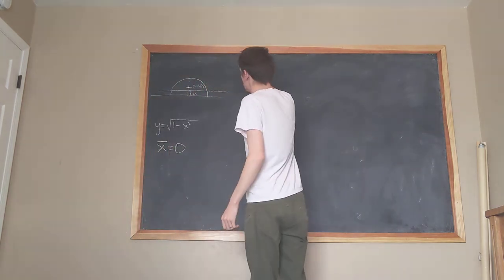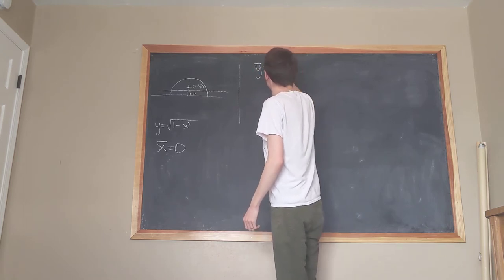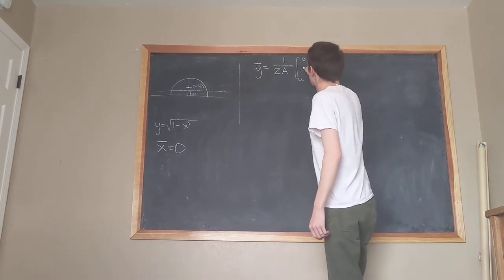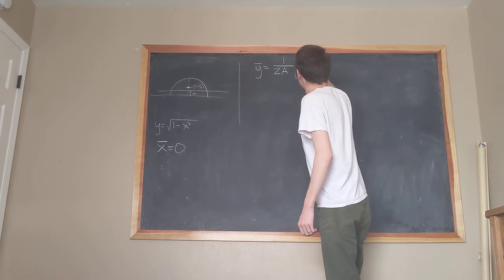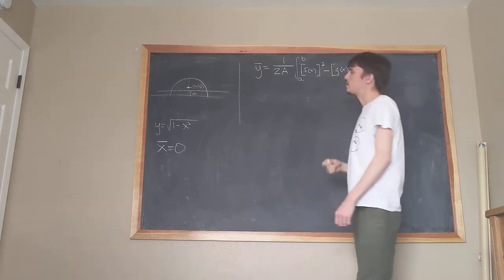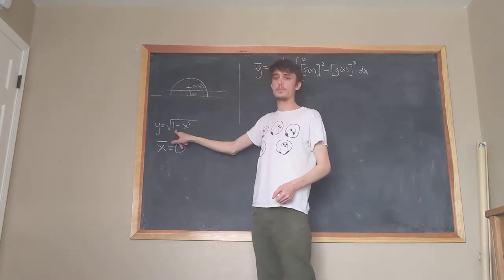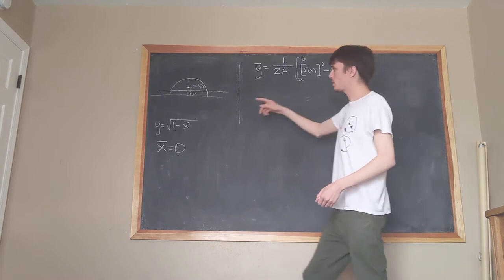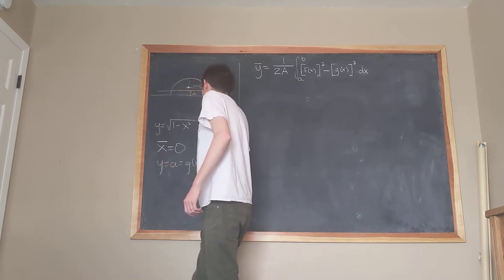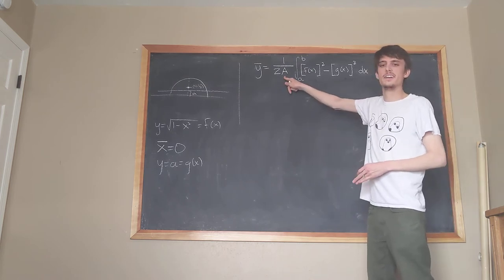I want to calculate y-bar because it turns out to be a really easy calculation. The formula for y-bar is: y-bar equals 1 over 2A times the integral from a to b of f(x) squared minus g(x) squared dx. Here f(x) is the top curve, which is the square root of 1 minus x squared, already written down. And g(x) equals a, a constant function — that's the horizontal cut.